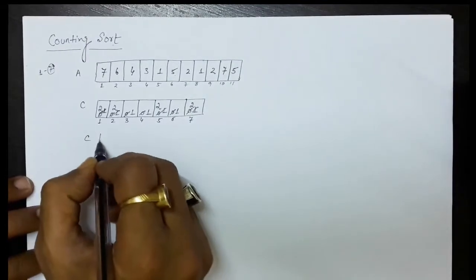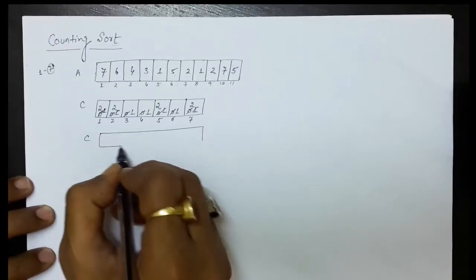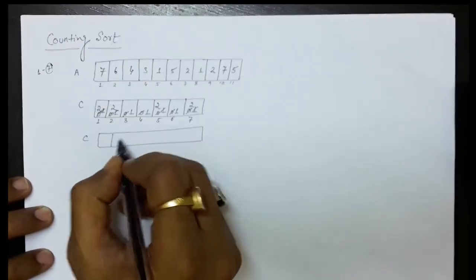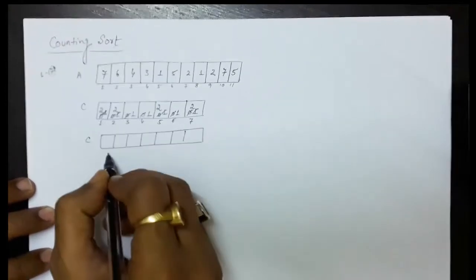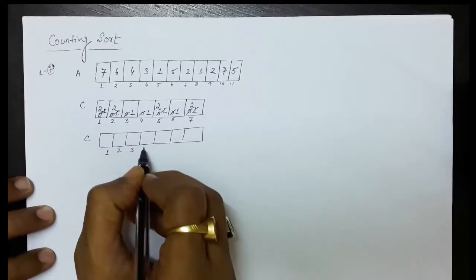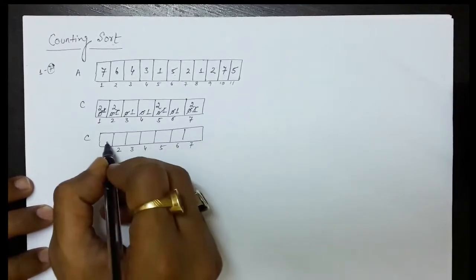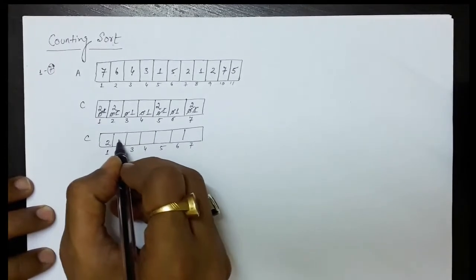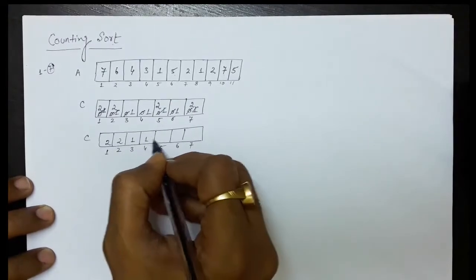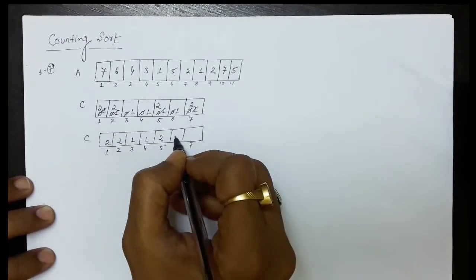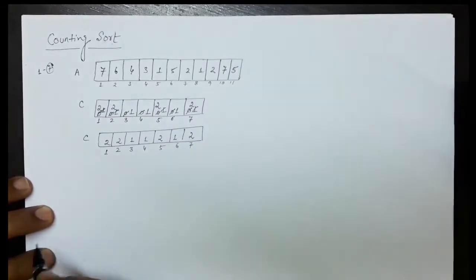This is the counting array. It now has the count of every element in the array: 1 has a count of 2, 2 has a count of 2, 3 has a count of 1, 4 has a count of 1, 5 has a count of 2, 6 has a count of 1, and 7 also has a count of 2.